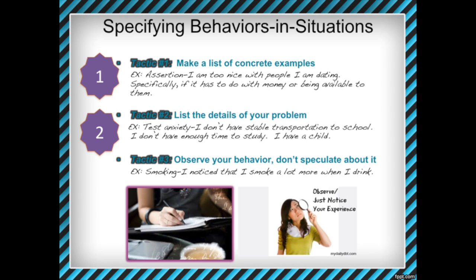If you can't think of five examples of when you've done your bad behavior recently, you might want to reconsider if this bad behavior is actually something you need to work on. The behavior needs to be something that's happening enough that you can reflect on it, observe it, and write about it. Go ahead and pause the lecture video and do lecture activity number one — write down a list of five concrete examples of recent times you've done your bad behavior.